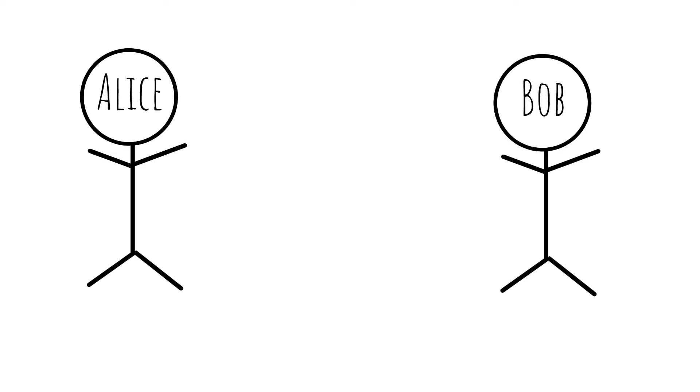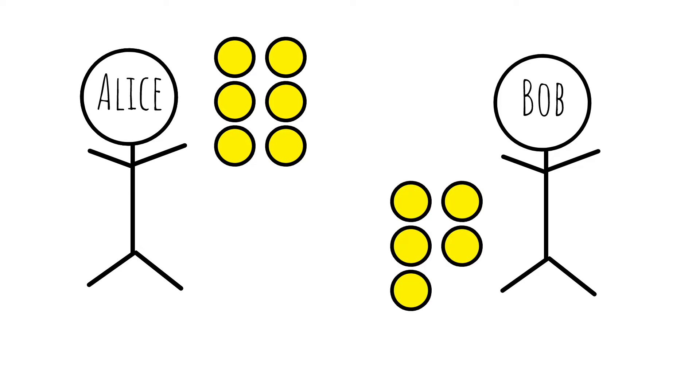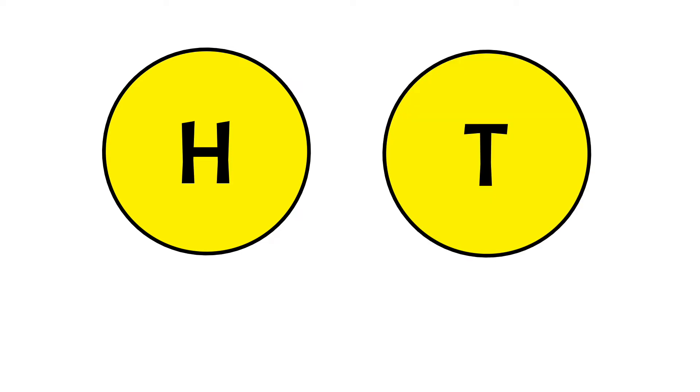Alice and Bob are playing a game against each other. So Alice has 6 coins while Bob has 5 coins. All coins are identical. Head on one side, tail on the other.